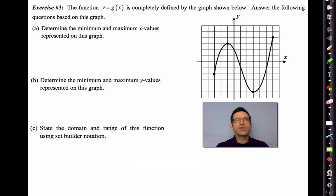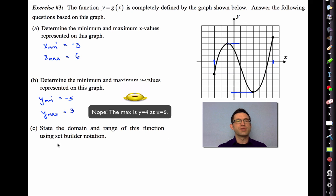Exercise 3. The function y equals g(x) is completely defined by the graph shown below. So there's no more than just what we see. There's no little arrows. The graph doesn't extend forever. Answer the following questions based on this graph. Letter A says determine the minimum and maximum x values represented on this graph. Well, the minimum x value is going to be all the way over on the left side. So I think I'll do x min equals negative 3. Let's see, my x max is going to be over here, so x max is 6. A little bit harder. Determine the minimum and maximum y values. Here's my minimum y value at negative 5, and the maximum at 3.